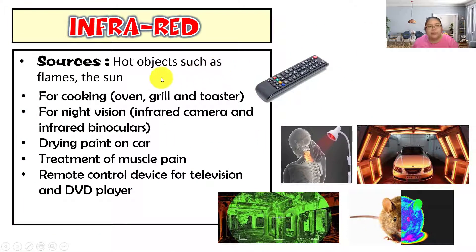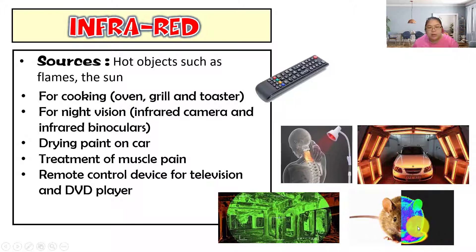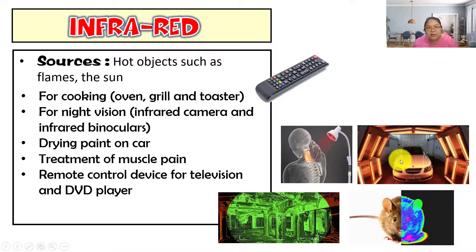Next is infrared. Sources come from hot objects such as flames and the sun. Applications include cooking — for grilling and toasters, which glow red. Infrared is also used for night vision cameras and infrared binoculars. It's used for drying paint on cars by using high infrared heat to make paint stick faster. Other uses include treatment of muscle pain and remote control devices for TV and DVD players.